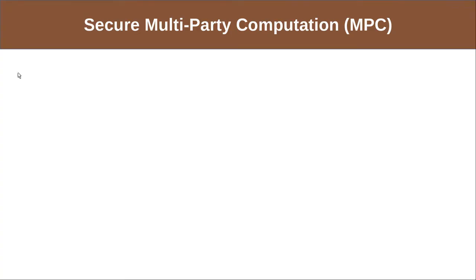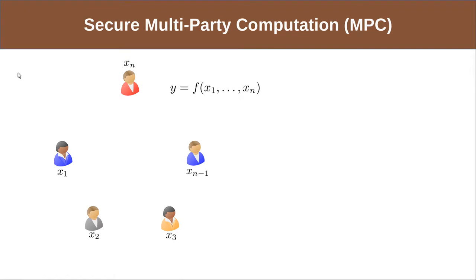A secure multi-party computation protocol allows a set of parties to compute a function of their private inputs while guaranteeing certain security properties even if some of them are corrupt. As the corrupt parties can collude with each other, they can be considered to be corrupted by a central adversary.